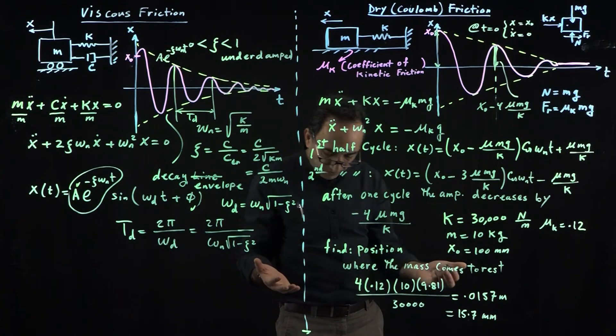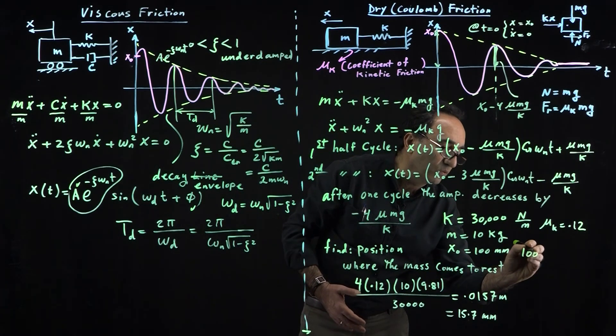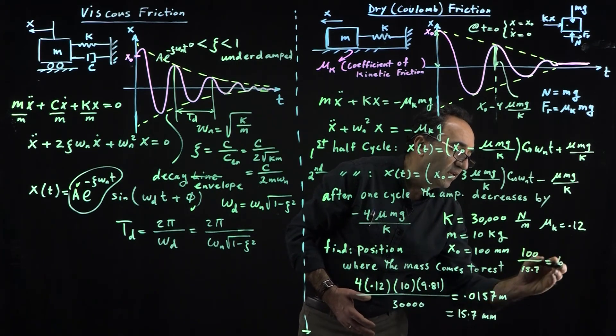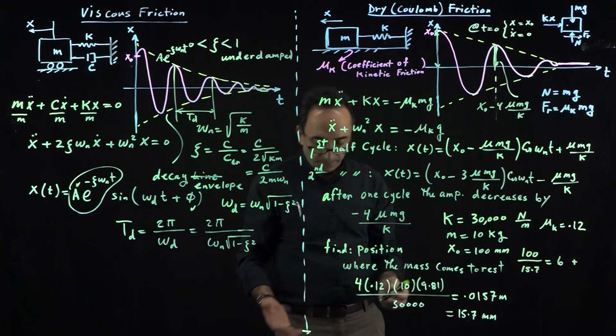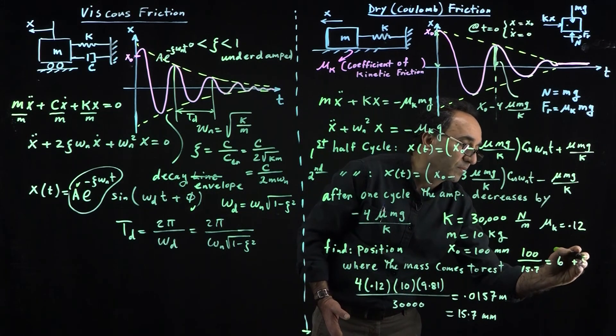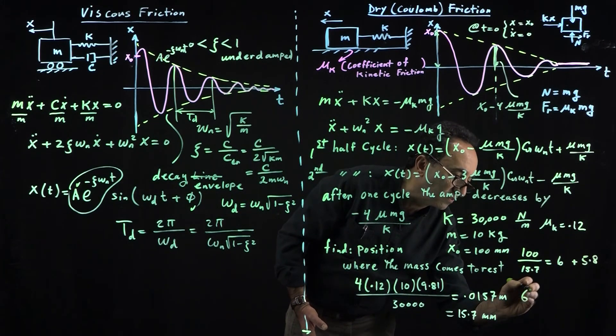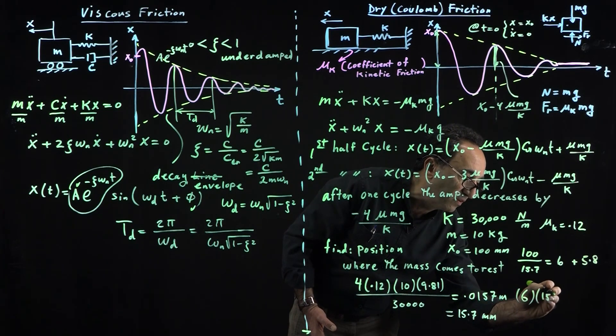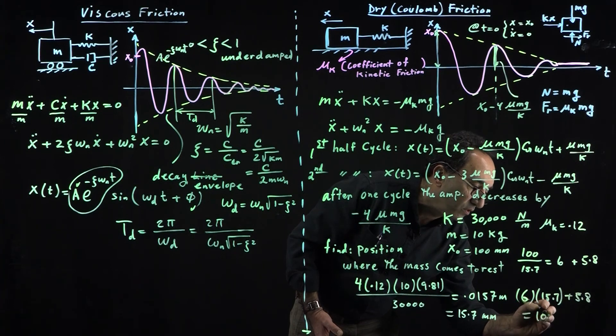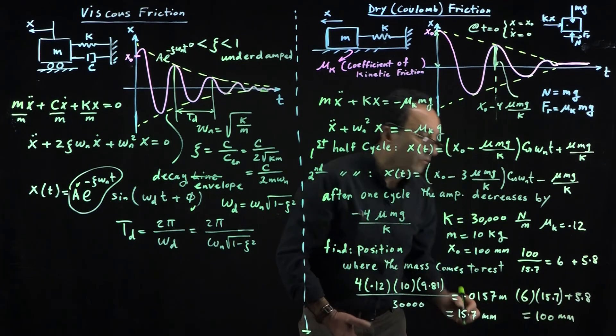If you take 100 and divide by 15.7, that becomes 6, and then what's left over from the 100 is 5.8 millimeters. In other words, if you take 6 and multiply by 15.7 and add 5.8 to it, that becomes 100 millimeters.